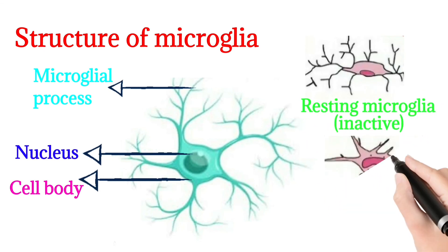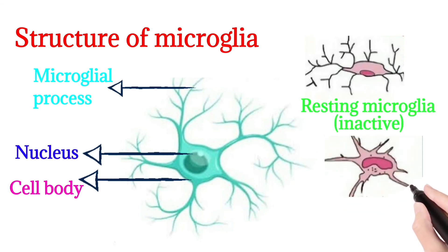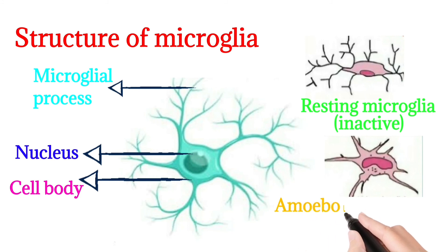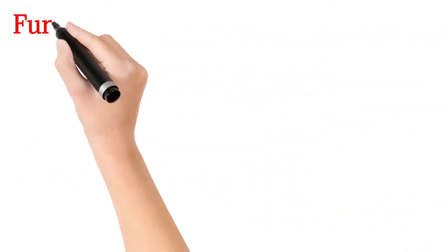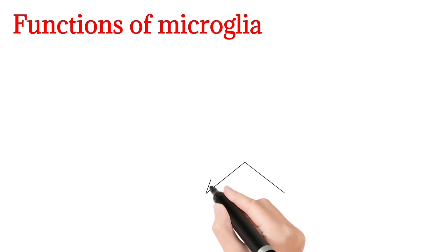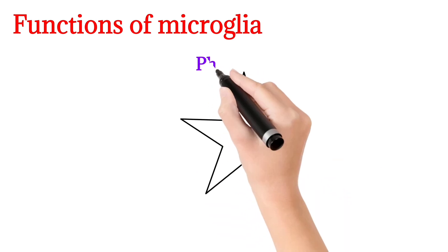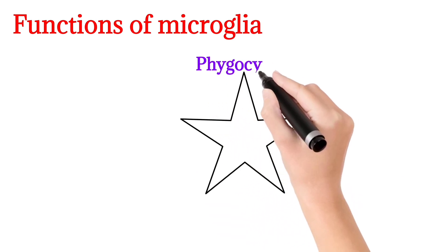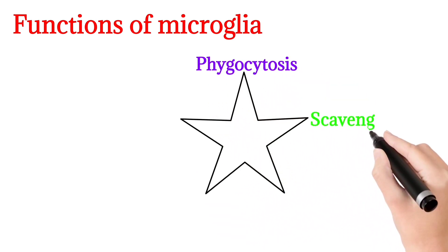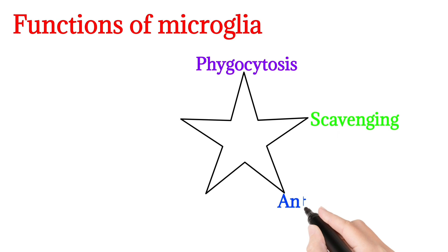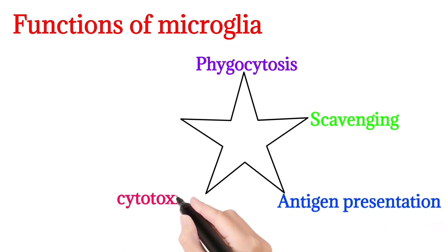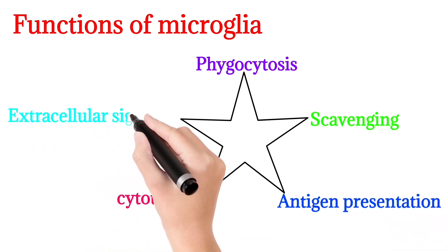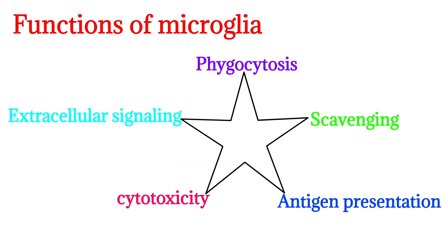Microglia can be active or non-active. In pathological conditions, resting microglia convert into an active form. The functions of microglia include phagocytosis, scavenging, antigen presentation, cytotoxicity, and extracellular signaling. Thanks for watching.